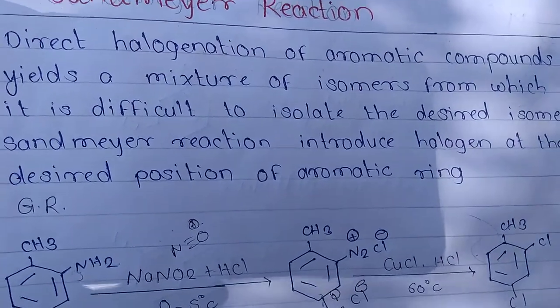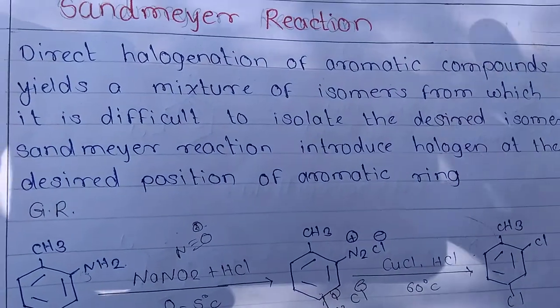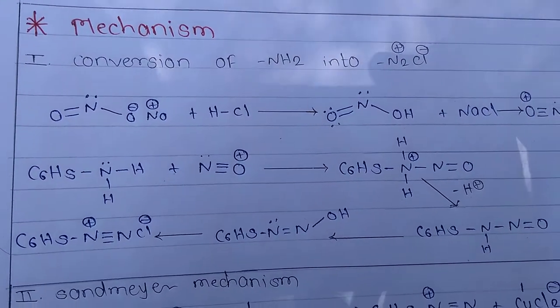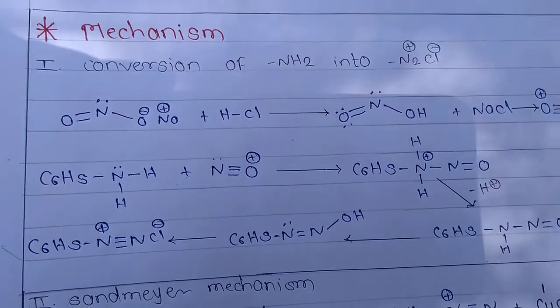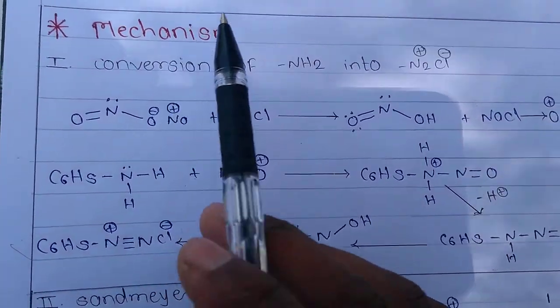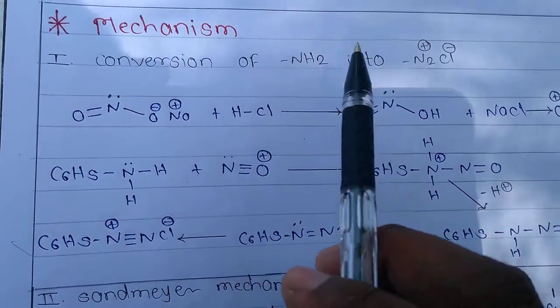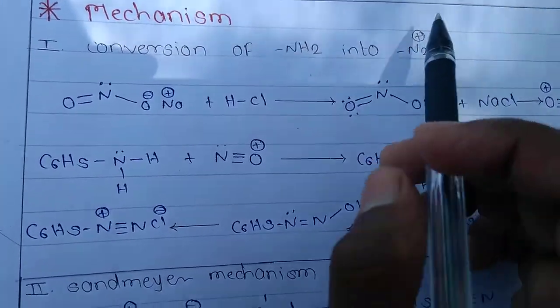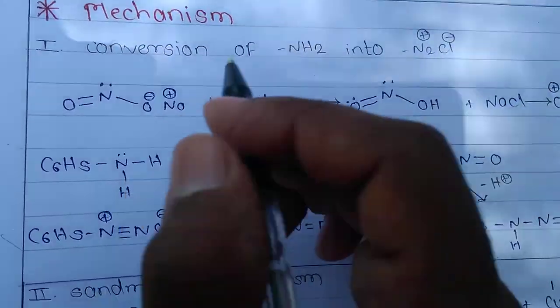Now let's talk about the mechanism of the Sandmeyer reaction. First, we discuss how the NH2 group is converted into N2+ Cl- (the diazonium salt).